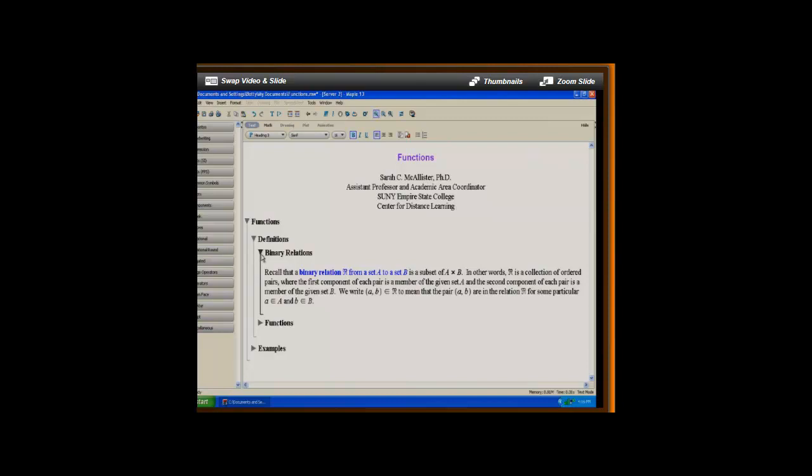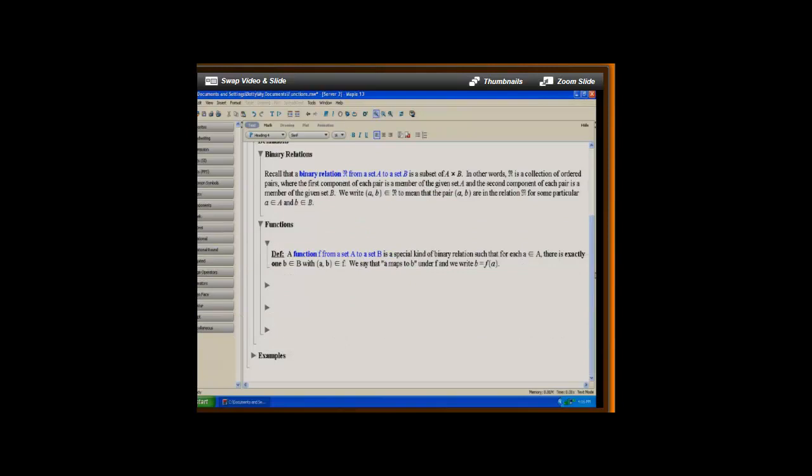Now, a function in the abstract setting is defined to be a special kind of binary relation. So now we write the function F instead of R from A to B is a special binary relation such that for every A in A there is exactly one B in B such that A comma B are related by the function F. In this case, we say that A maps to B under F and we write B equals F of A. And again, we can do that because there's exactly one B for each A.